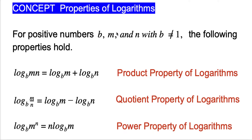Properties of logarithm. Now let's prove the quotient property of logarithm, which states that log base b of m divided by n is equal to log base b of m minus log base b of n.